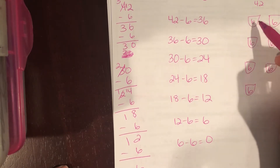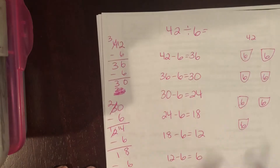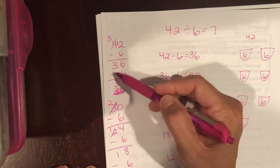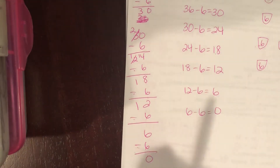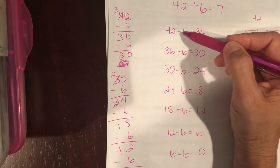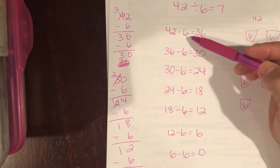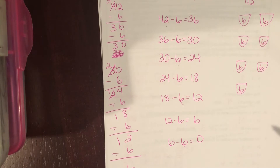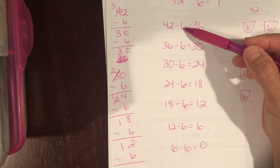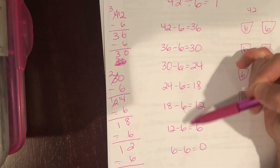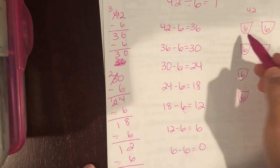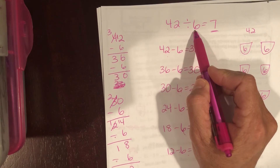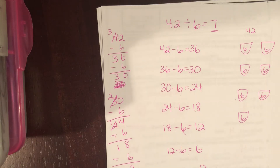How many salad bowls did we put six in? One, two, three, four, five, six, seven. So 42 divided by six equals seven. Count the subtraction signs: one, two, three, four, five, six, seven. We started at 42 and subtracted six seven times, which means we took away seven groups of six. This is a very long way to get the answer, but it shows you are subtracting equal groups for division. 42 divided into groups of six gives us seven groups.